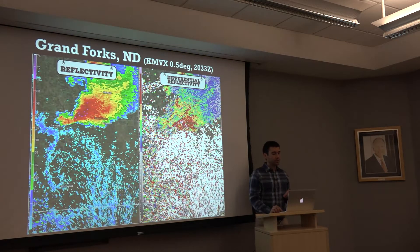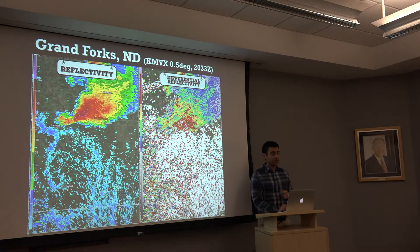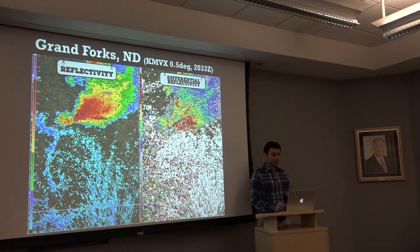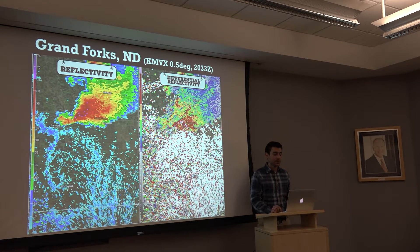Our example comes from last year in Grand Forks, North Dakota. On the left is reflectivity, on the right is differential reflectivity — we see high values of ZDR, perhaps a ZDR arc. We have a nice well-defined thunderstorm, perhaps even a supercell. We want to look up to see where the hail is growing so we can get that warning out before it reaches the surface.